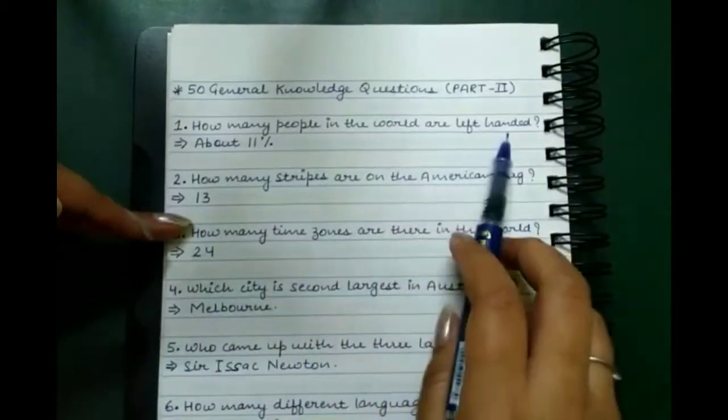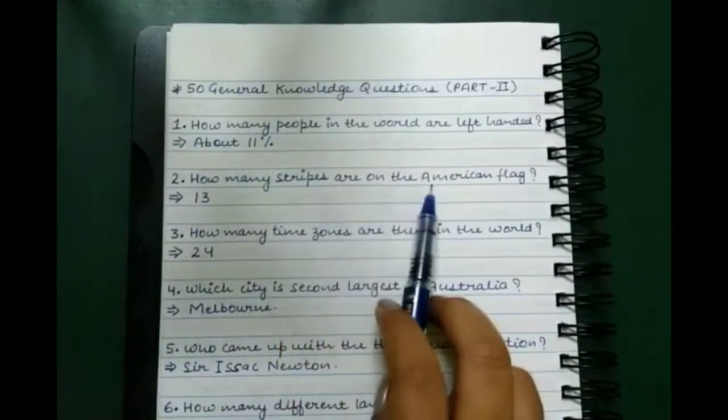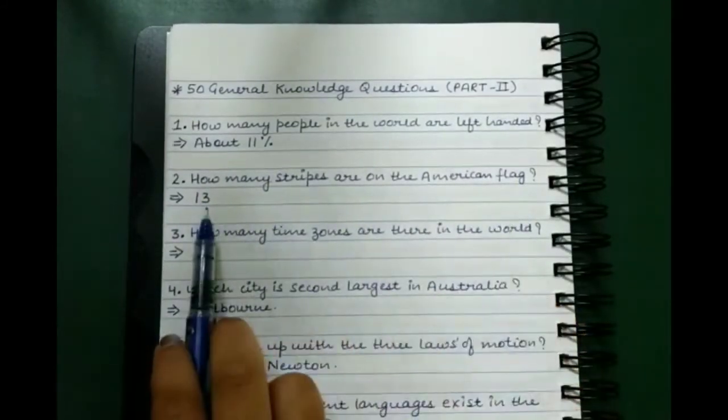So guys, first question is: how many people in the world are left-handed? It's about 11%. How many stripes are on the American flag? 13 stripes.